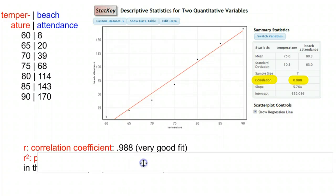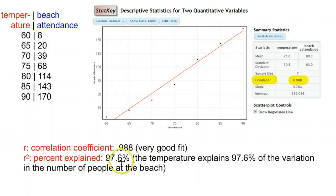Now when we square that, our percent explained, we're up to 97.6%. So you square 0.988, you get 97.6%. And so what that means, if you're taking notes, the temperature, the x-axis, explains 97.6% of the variation in the number of people at the beach. And that's our y-axis here. So temperature explains 97.6% of the variation in the number of the people at the beach.